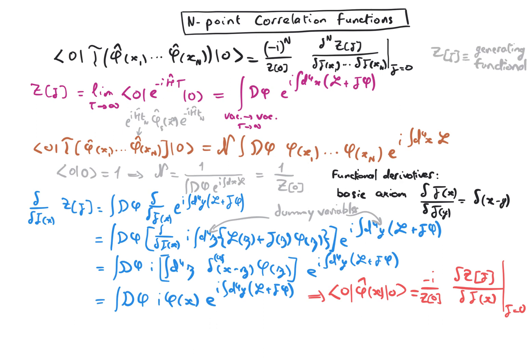For instance, you can use this expression with only two fields, and therefore, a second-order functional derivative of z, in order to recover the field propagators, for instance, the Klein-Gordon propagator, if you start from the Klein-Gordon Lagrangian.